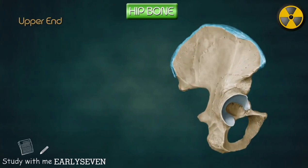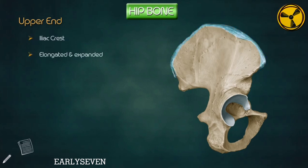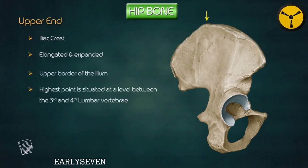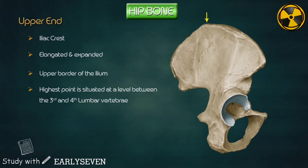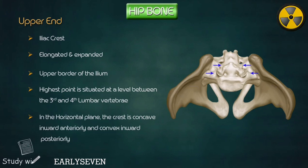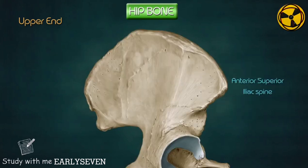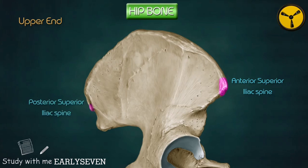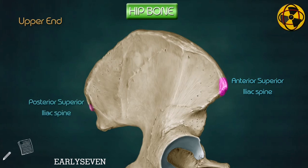Upper end, also known as the iliac crest. It is elongated and expanded and makes up the upper border of the ilium. The highest point of the iliac crest is situated at a level between the third and fourth lumbar vertebrae. When looked at in the horizontal plane, the crest is concave inward anteriorly and convex inward posteriorly. The anterior superior iliac spine is a projection at the anterior end of the iliac crest, and the posterior superior iliac spine is a projection at the posterior end.